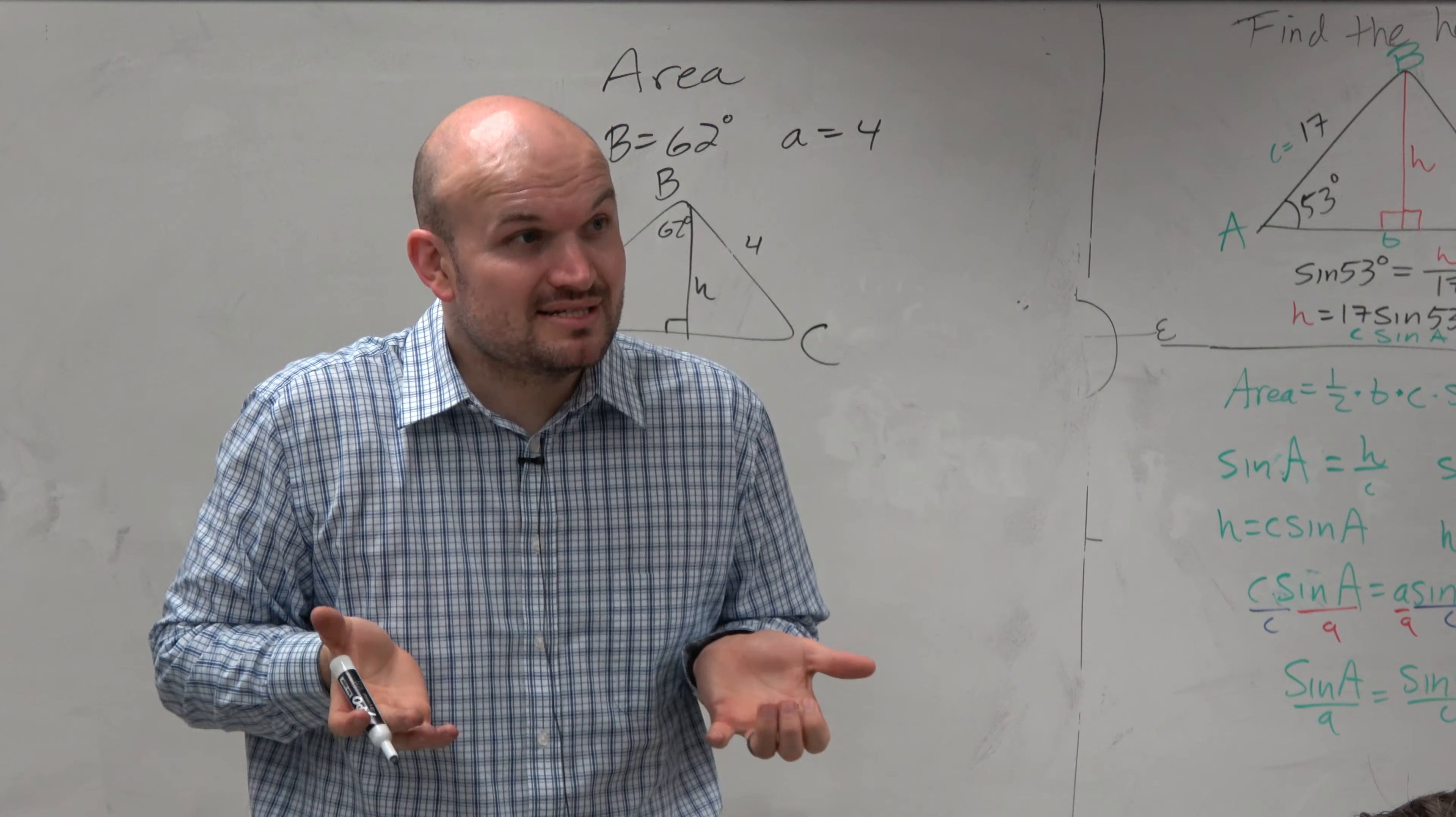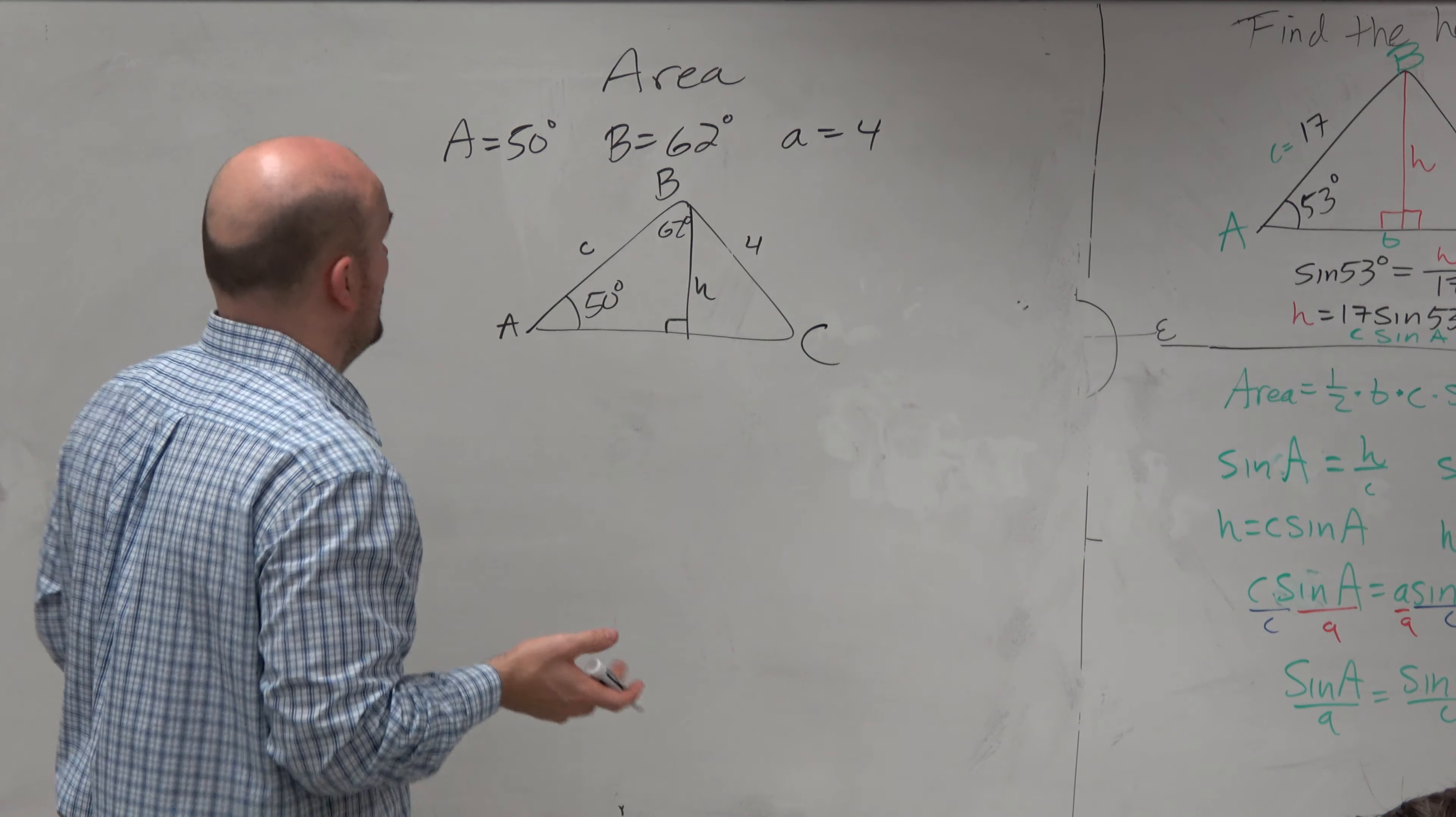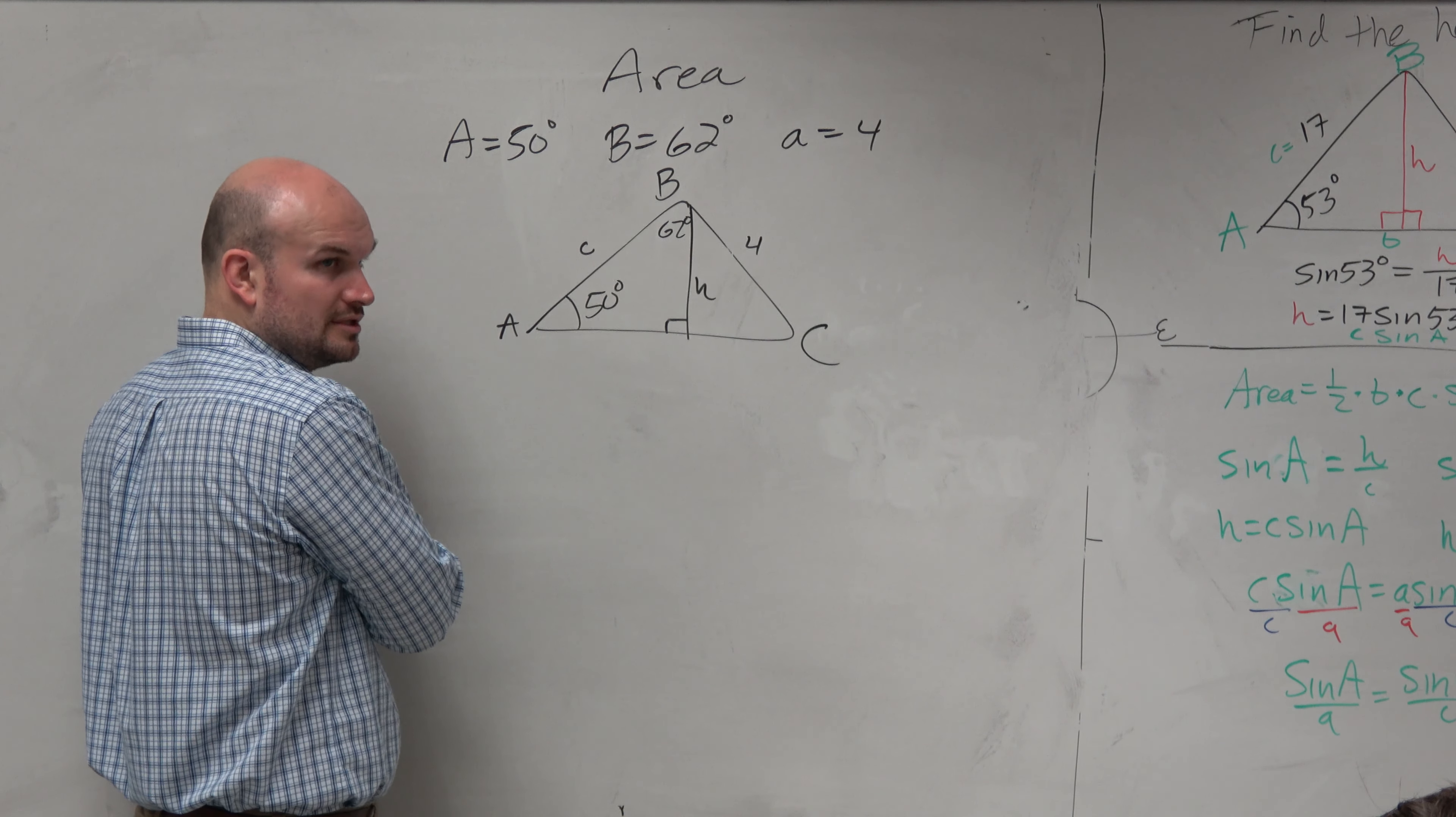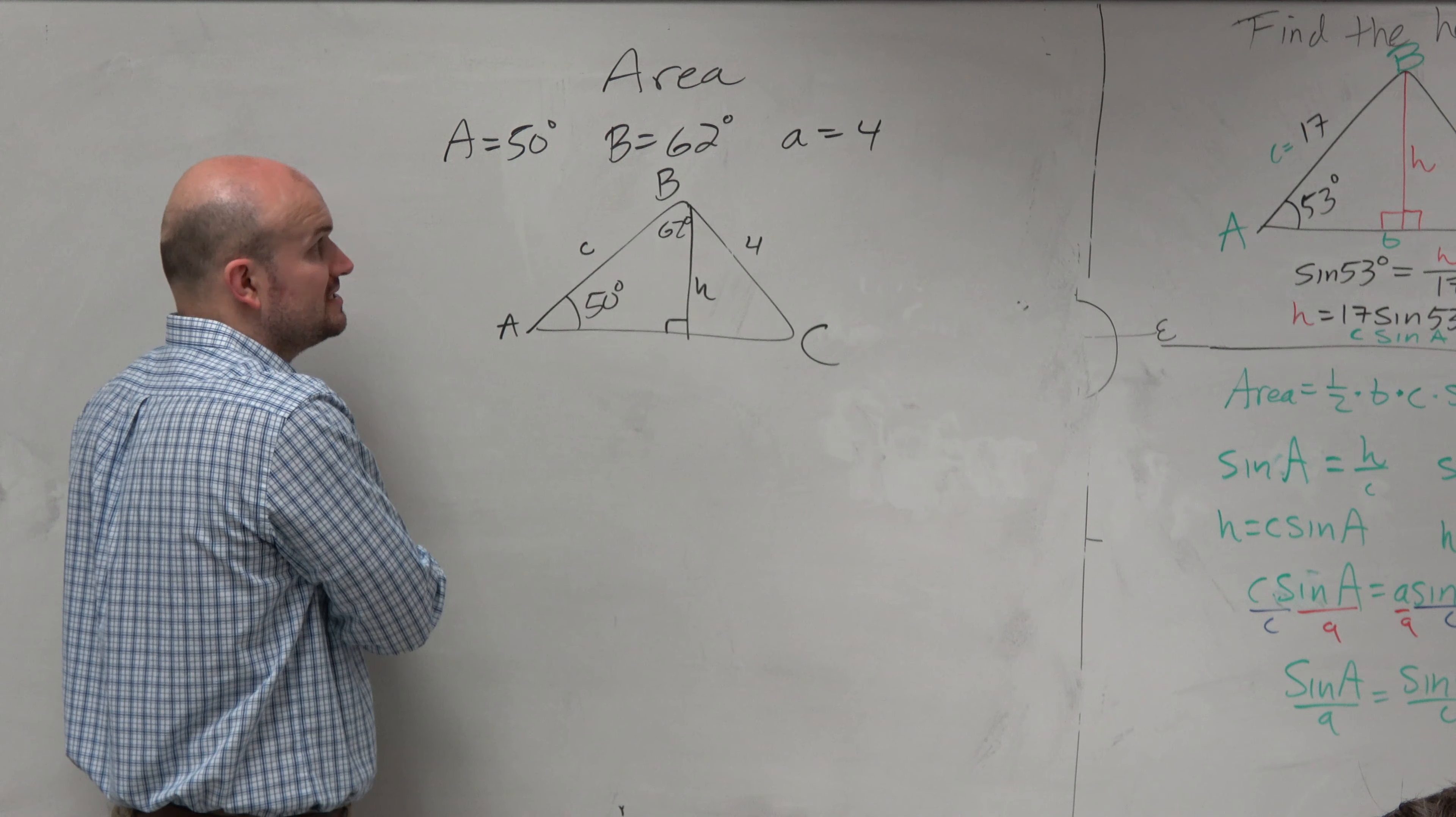Right? But the problem is, I don't know, in this case, I don't know what, if I'm going to figure out C, I got to have a ratio of some sort, correct? So is there any way I can figure out what the angle C is, just based on this information?